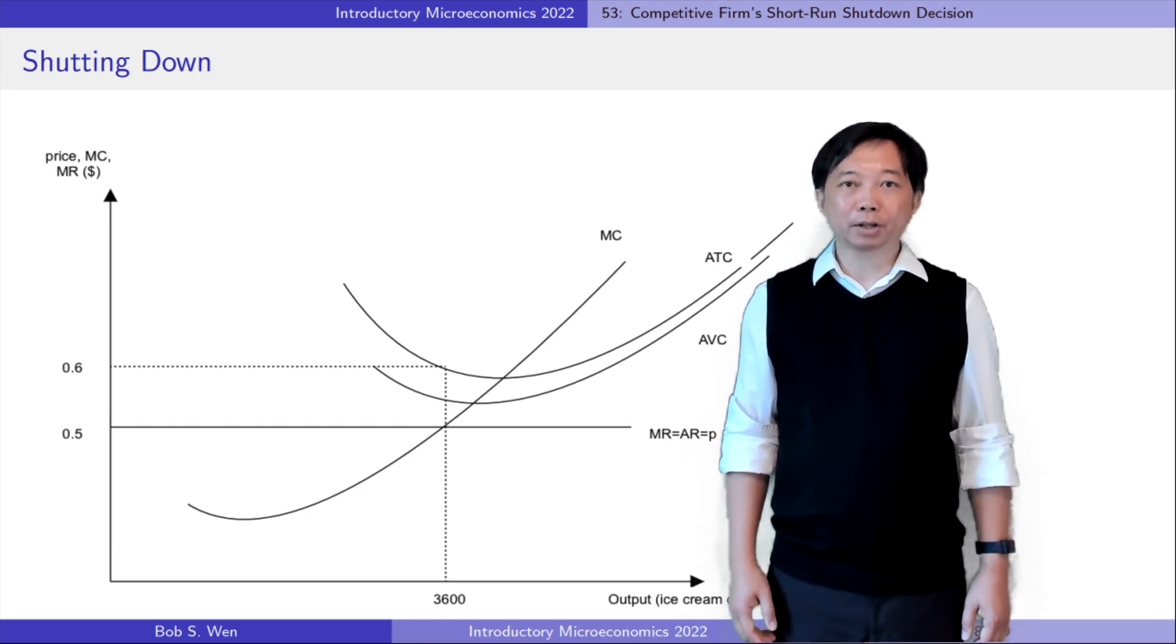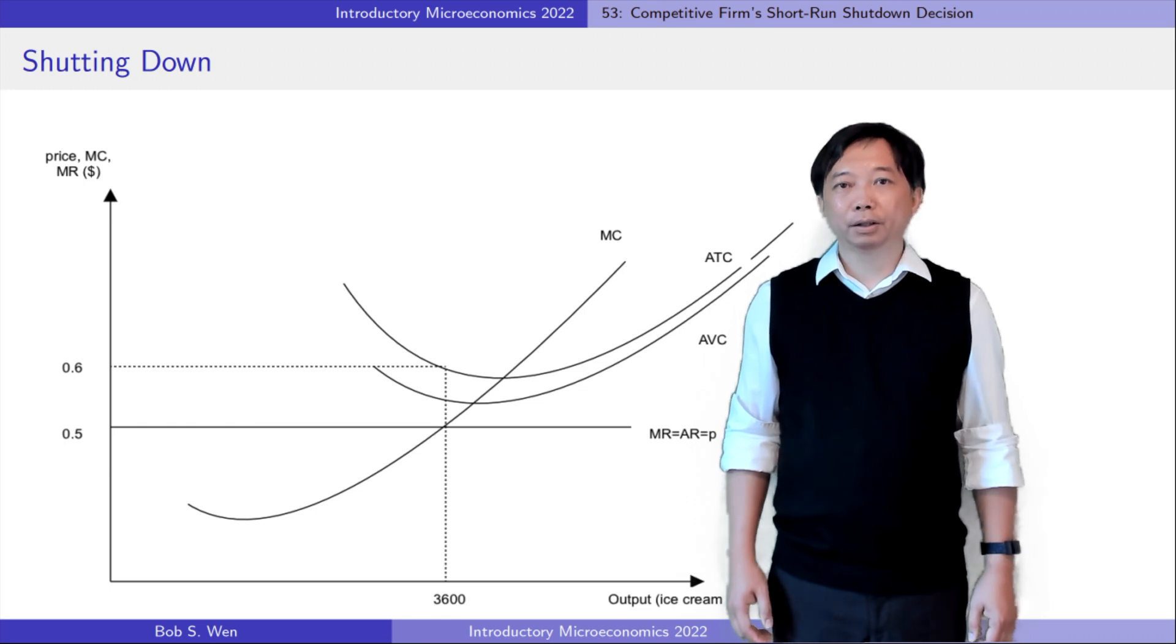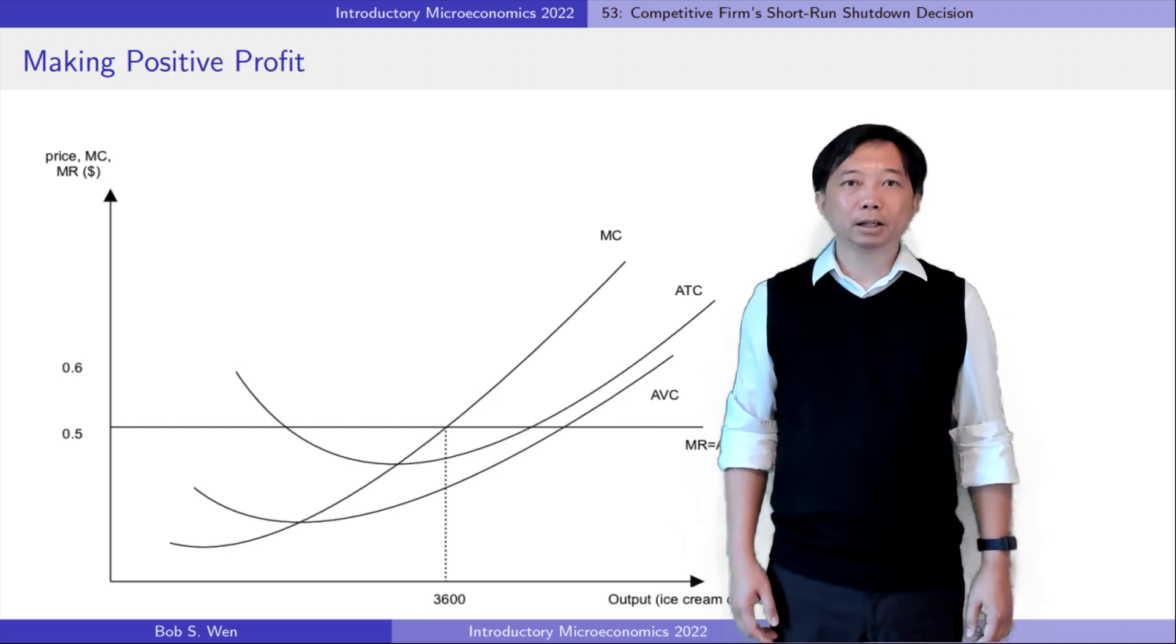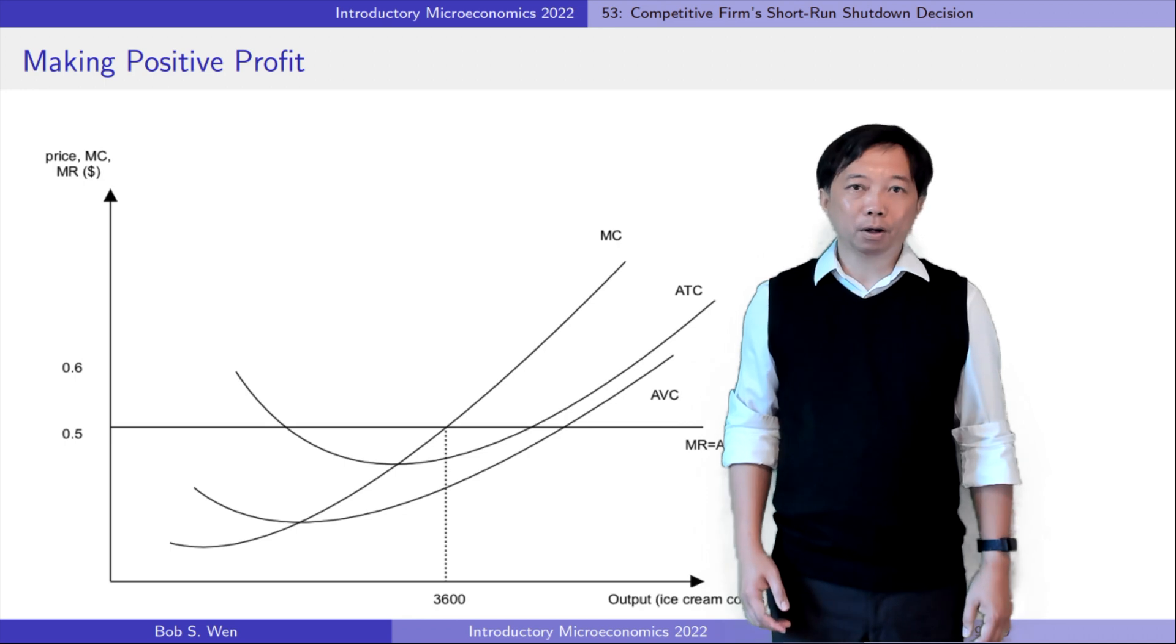If the market price is lower than the minimum average variable cost, the firm shuts down because the revenue could not cover its variable cost.